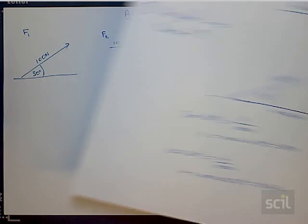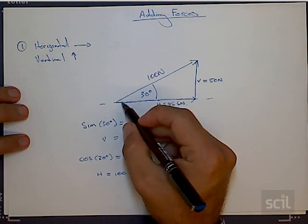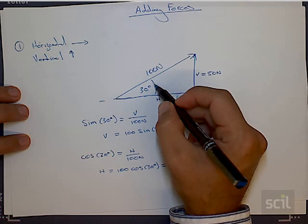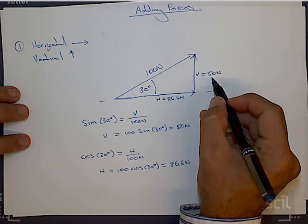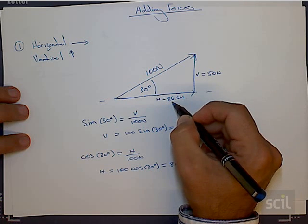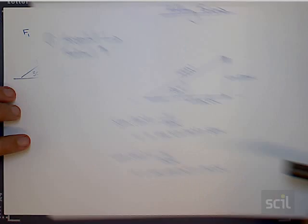Now, just going back to our example before, we saw that a hundred Newton force acting at 30 degrees had a vertical and a horizontal component of 50 and 86.6, so what we can straightaway say is...